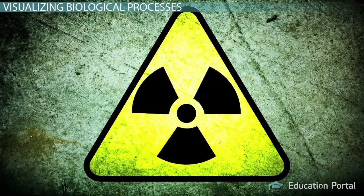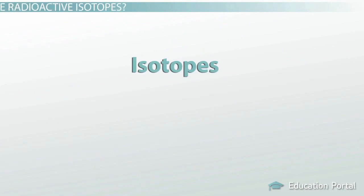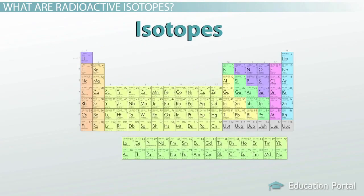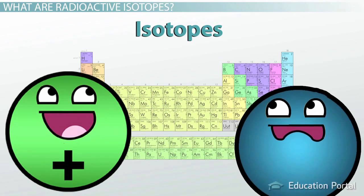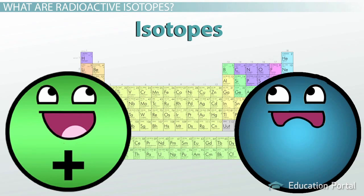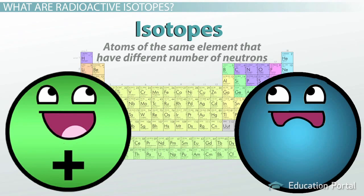One answer is radioactive isotopes. Let me refresh your memory on isotopes. Each element in the periodic table has a set number of protons, but can have a variable number of neutrons. Atoms of the same element that have different numbers of neutrons are referred to as isotopes of the element.